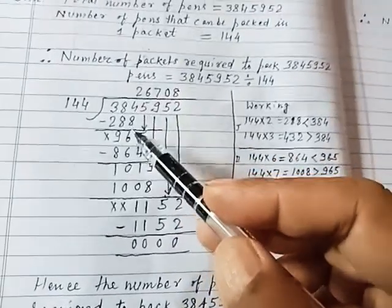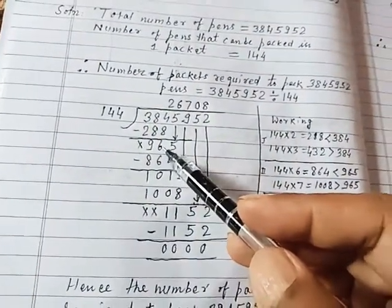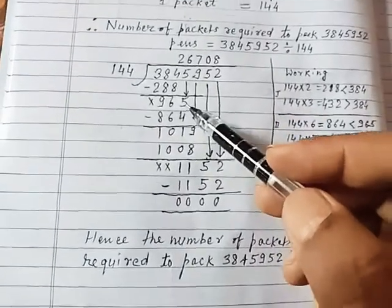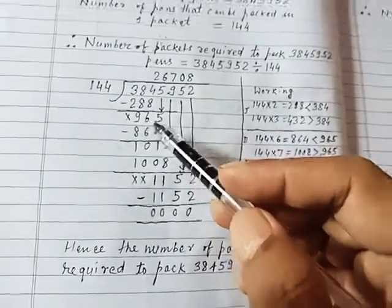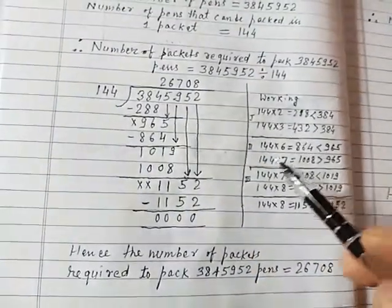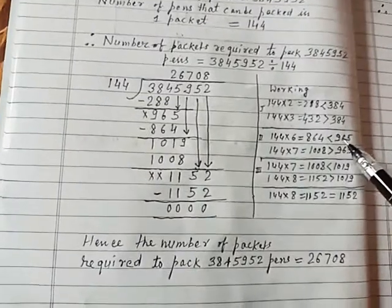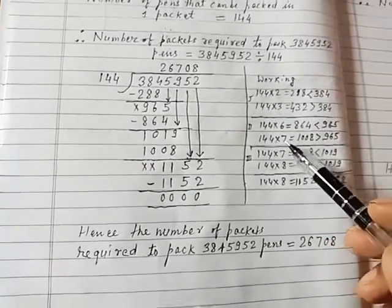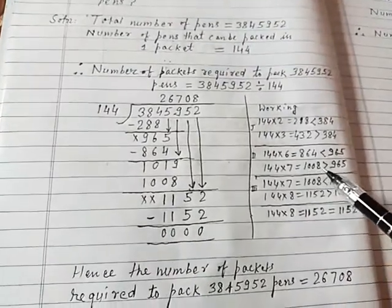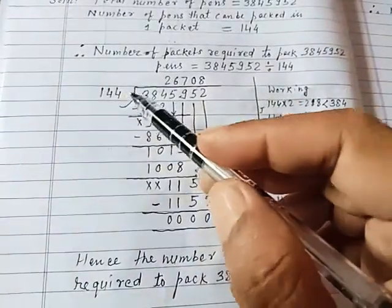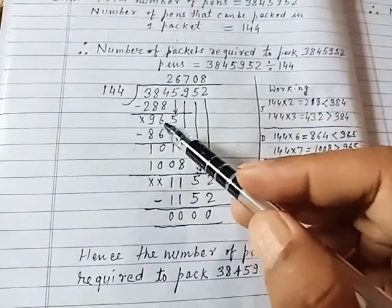Now subtracting we will get 96. Now putting down another digit, that is 5 from the dividend, we will get 965. Now again, 144 into 6 is equal to 864 which is less than 965, and 144 into 7 is equal to 1008 which is greater than 965. That is to say, 144 is contained 6 times in 965.